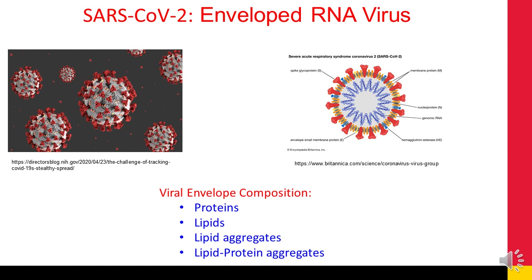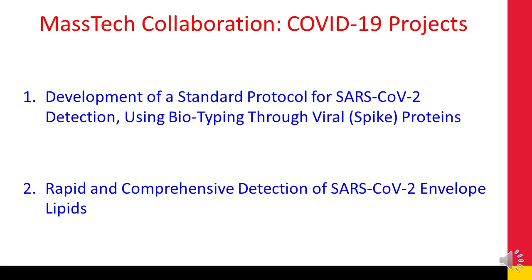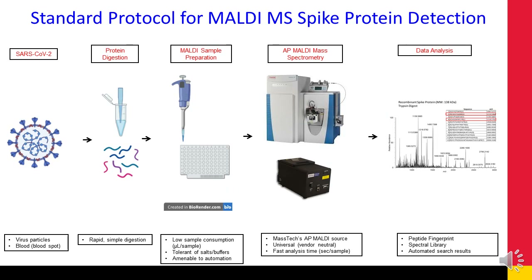We are interested in using mass spectrometry to characterize the protein content and the lipid composition of enveloped viruses, in particular SARS-CoV-2. We have initiated two collaborative projects with Mass Tech: the first is development of a standard protocol for SARS-CoV-2 detection using biotyping through spike proteins, and the second — which I'll briefly mention at the end — is rapid and comprehensive detection of SARS-CoV-2 envelope lipids. We set out to develop a standard protocol for spike protein detection that is simple, fast, and accessible.